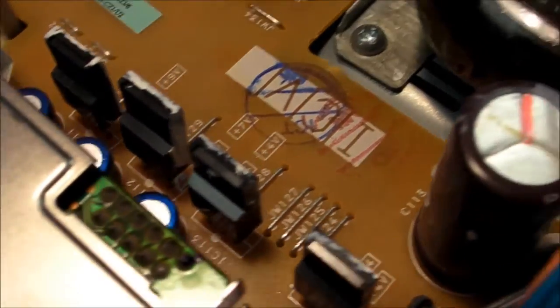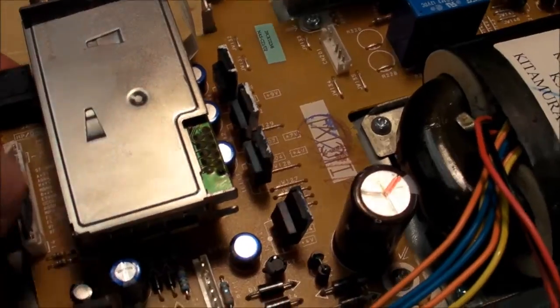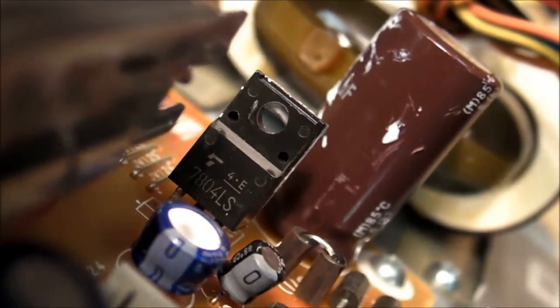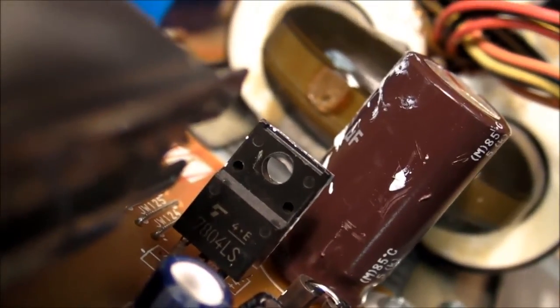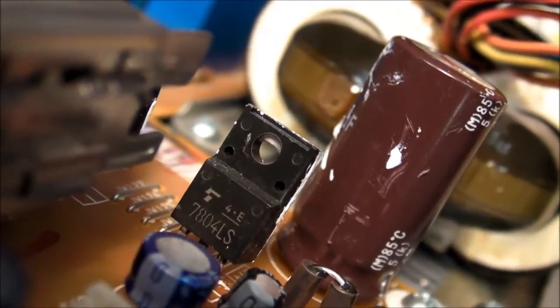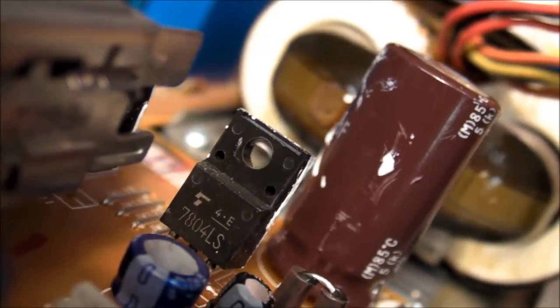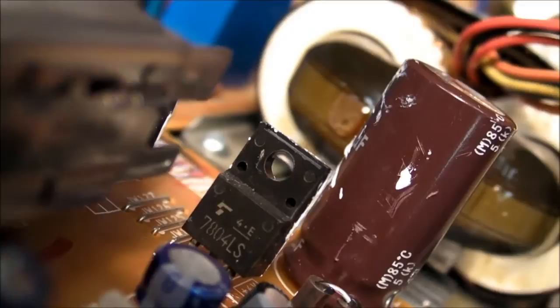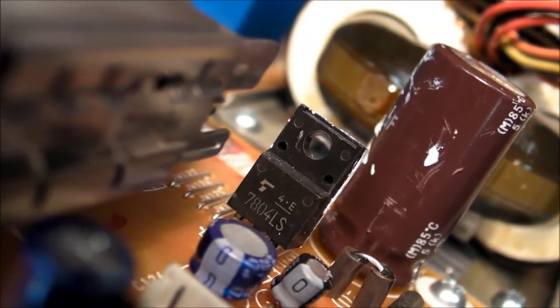I wonder if these are custom or if they're readily available. Let's have a look at the actual part number printed on the device. Let's see if the camera can focus here. There it is - 7804 LS. At first I didn't recognize that symbol on the top left, but I found online that it's actually Toshiba. Let's go have a look at the datasheet.